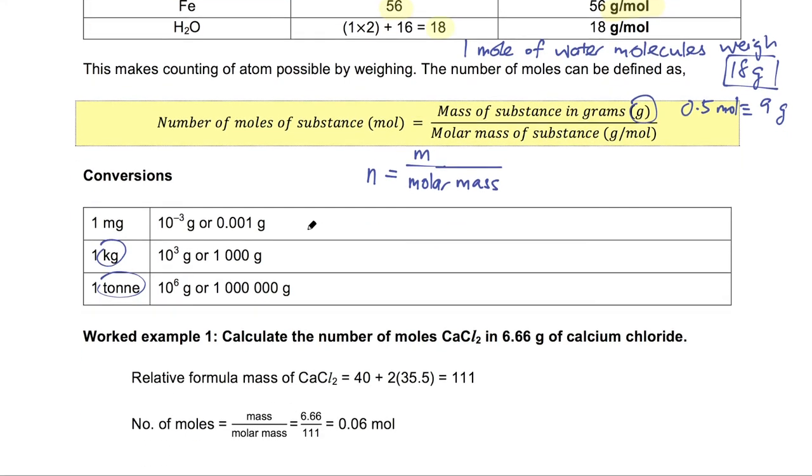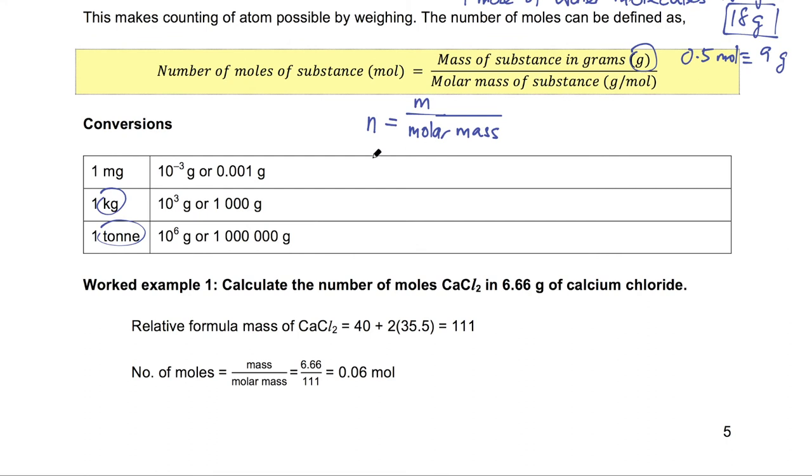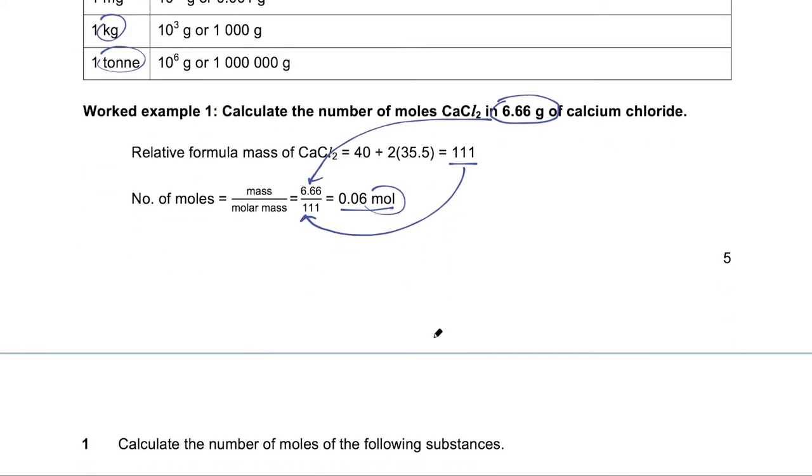Let's illustrate this with an example. Here, we are asked to calculate the number of moles of calcium chloride in 6.66 grams. So we apply the formula. Number of moles is the mass over molar mass. So 6.66 grams is the mass, which goes here. The molar mass is the same as the MR, which goes there. So the number of moles is 0.06 moles. Always remember that when we talk about number of moles, we must have a unit, which is mol.